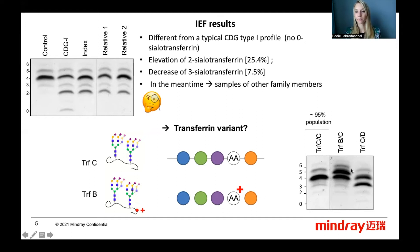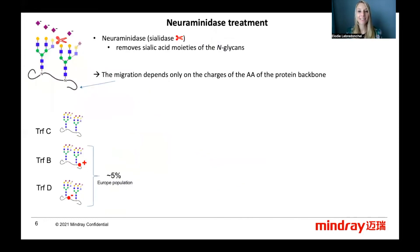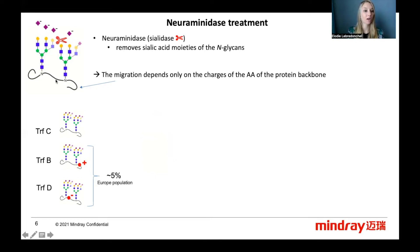As you can see, the two versions of transferrin are seen in the gel. To prove the existence of a transferrin variant, we need neuraminidase. Neuraminidase, also known as sialidase, is an enzyme that removes sialic acid moieties on the N-glycan. Thus, the migration profile of the transferrin only depends on the charge of the amino acids of the protein backbone.